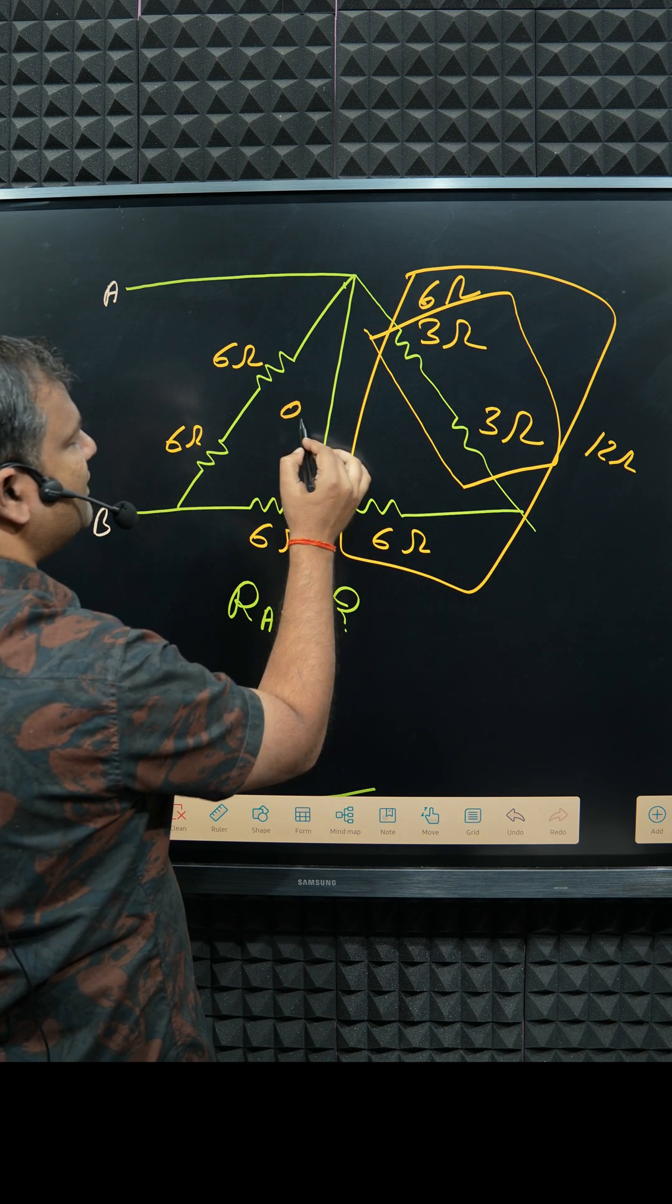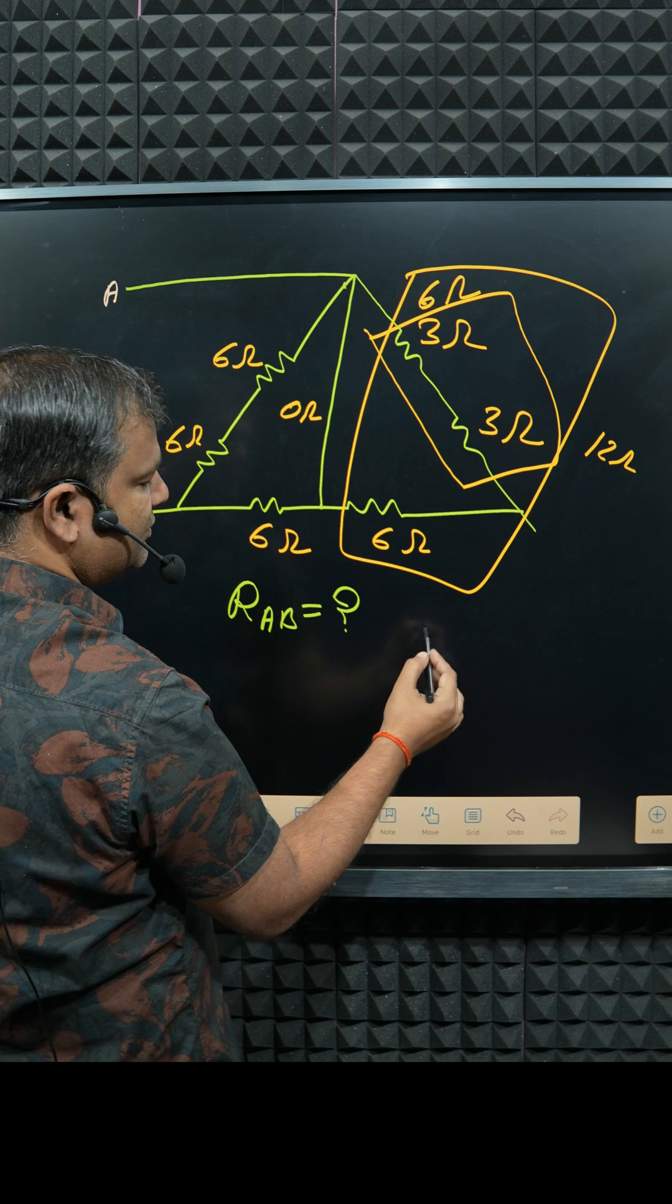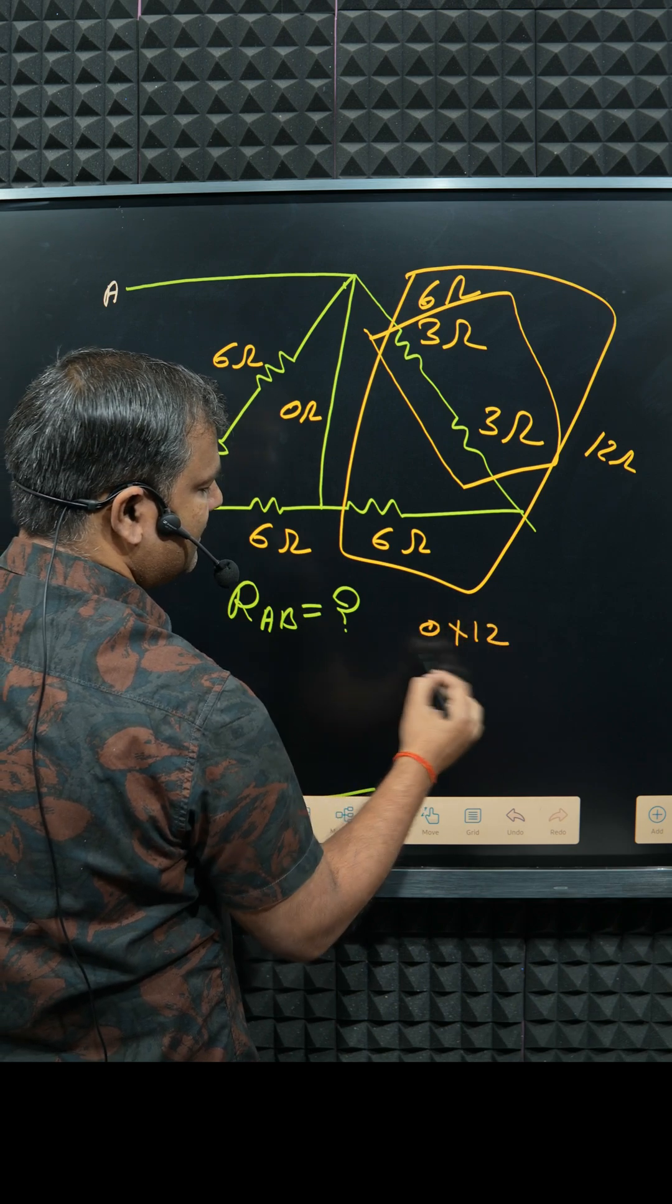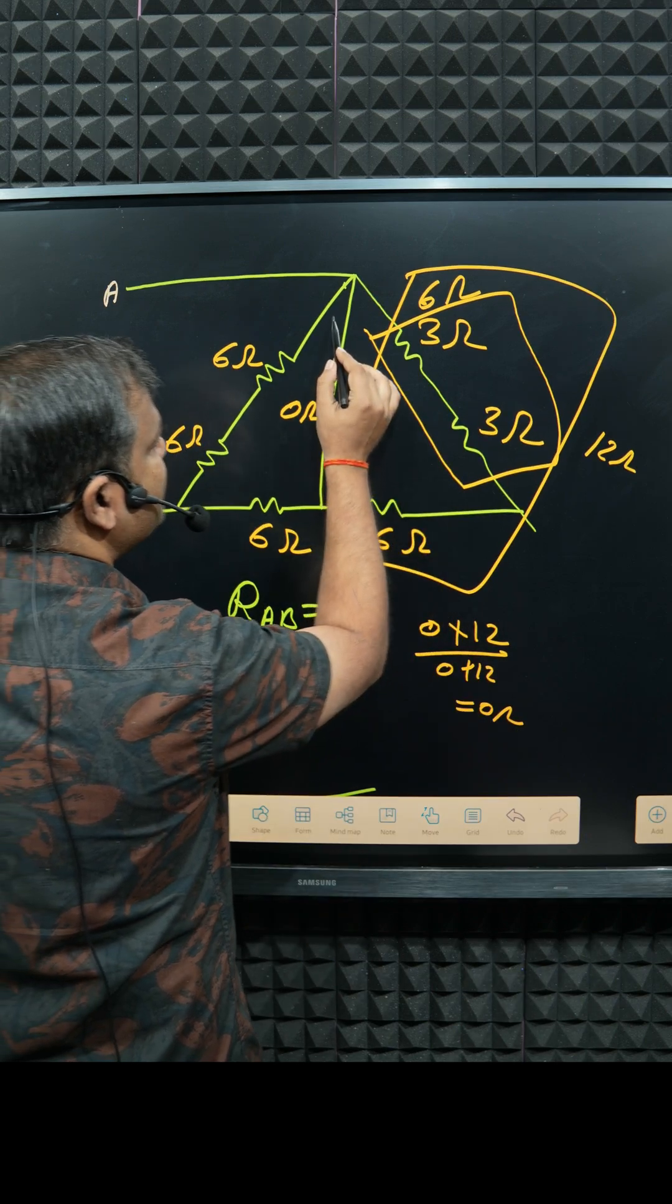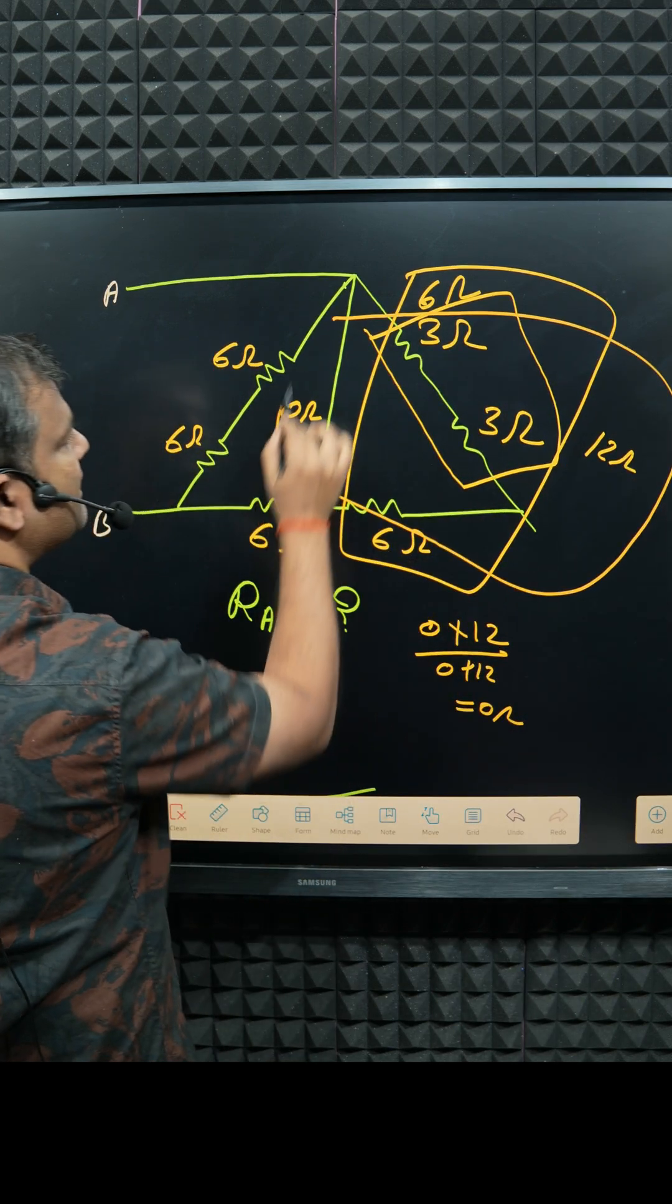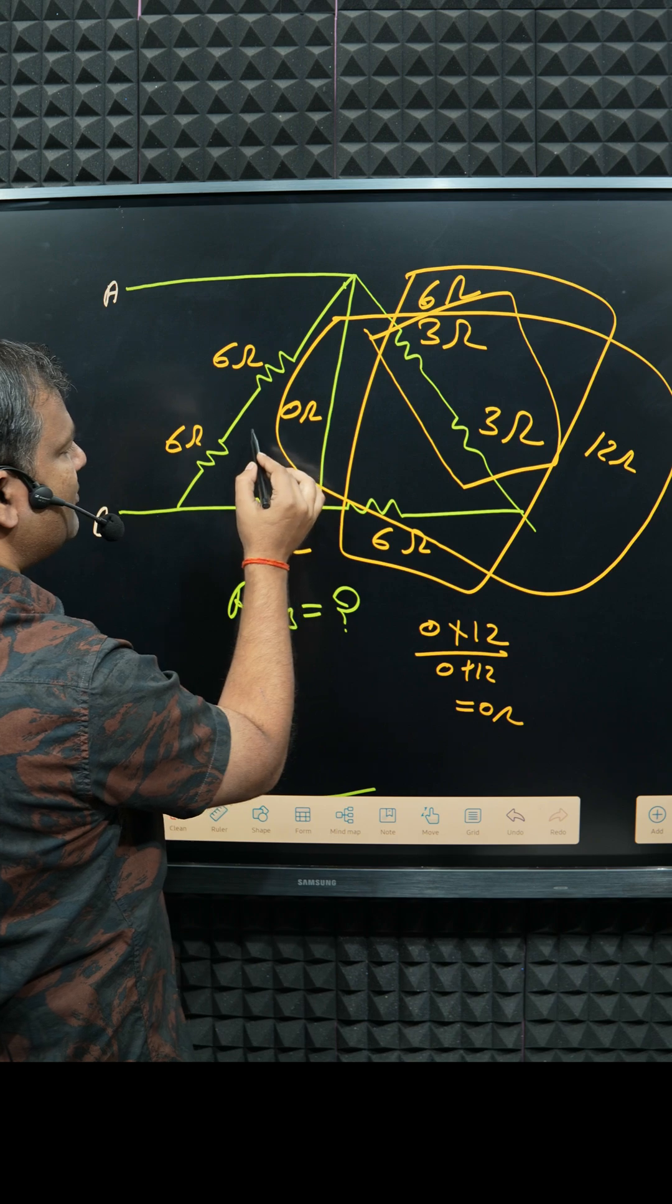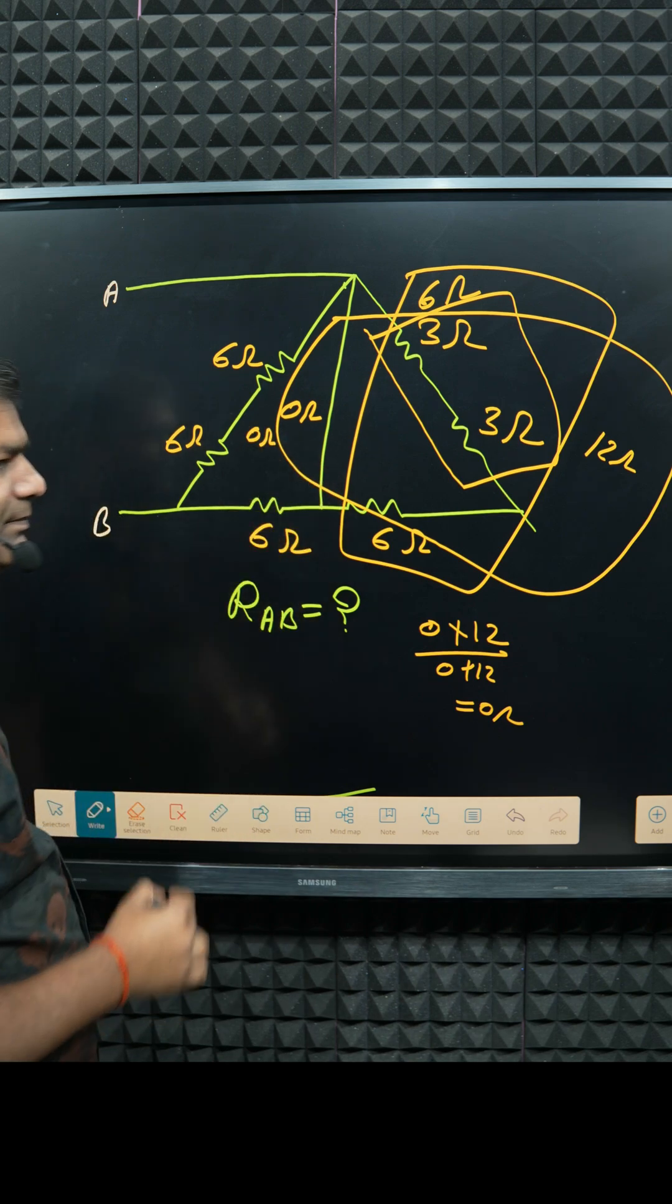And what about that one? 0 ohm. So 0 and 12—0 into 12—both are parallel. 0 plus 12, so basically 0 ohm. So equivalent resistance between combination of these two, how much? 0 ohm. Clear, because of short circuit.